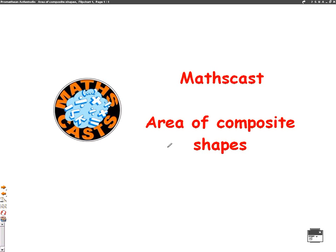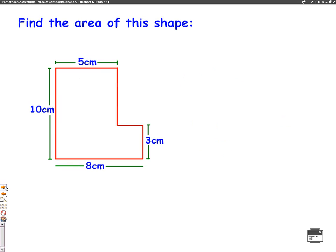Hello, we're going to do a MathsCast now on area of composite shapes. So all this is, is when you have two shapes put together and you're asked to find the total area. So here we're asked to find the area of this shape.